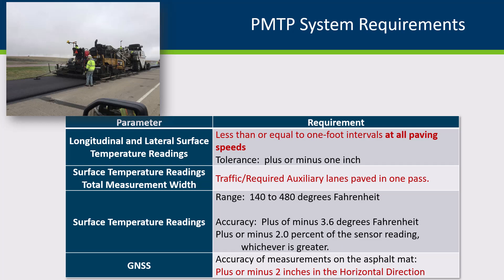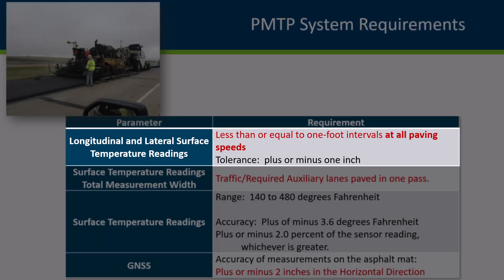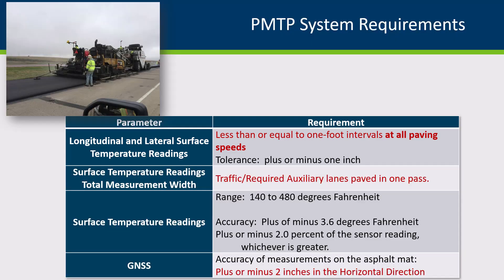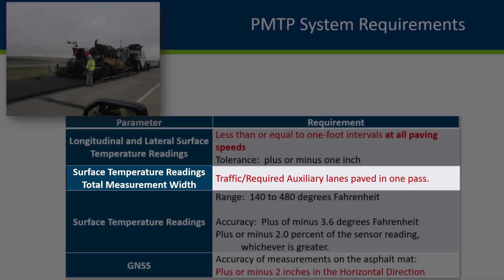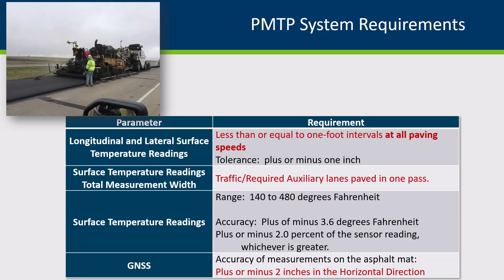Use a PMTP system that functions independently from the paving crew during normal paving operations but requires an operator to initiate the start of data collection. Section B1A lists the PMTP system requirements. Ensure that the PMTP system can collect measurements longitudinally and laterally at one foot or less intervals at all paving speeds. The system can capture the entire width of surface temperature measurements for the required traffic and auxiliary lanes being paved by one pass of the paver.